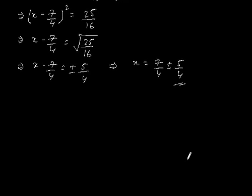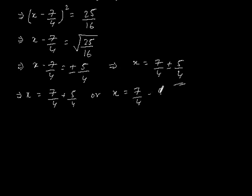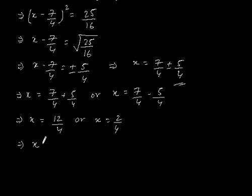So x can be 7 by 4 plus 5 by 4, or 7 by 4 minus 5 by 4. This gives x is equal to 12 by 4, which is 3, or x is equal to 2 by 4, which is 1 by 2.